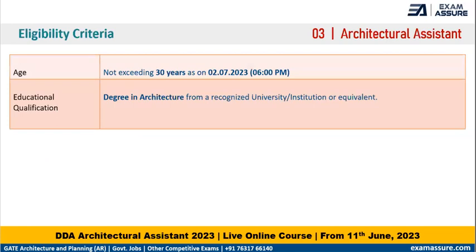For the eligibility criteria, the candidate shall not be more than 30 years of age as on 2nd of July 2023, which is the last date for the application. For the educational qualification, the candidate should have a degree in architecture from a recognized university or institution.